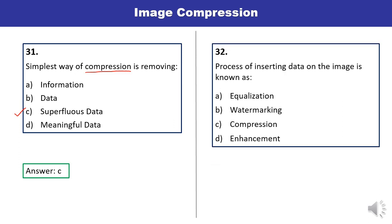Question 32: The process of inserting data on an image is known as what? The process where data has to be inserted on an image is actually watermarking. You must have done a number of computer programs for watermarking, where you try to insert data on the image.